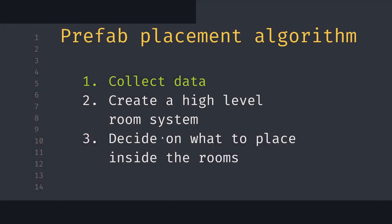The general algorithm to place prefabs in a procedurally generated dungeon is: first, collect the data about our dungeon. Second, create a high-level room system so we can decide where to spawn the player, where to have a boss fight, or where to have simple enemies and treasure. The last step is to decide on the details — what exactly we want to place inside those specific rooms.